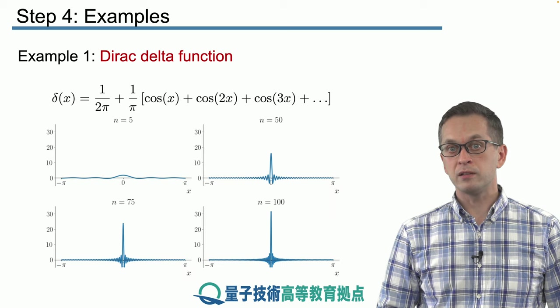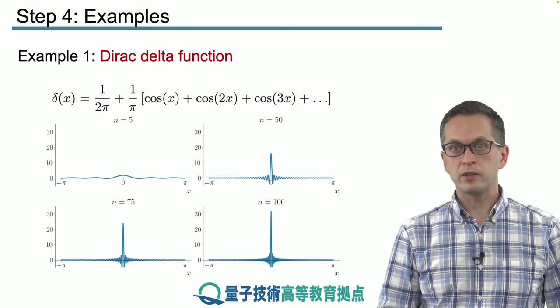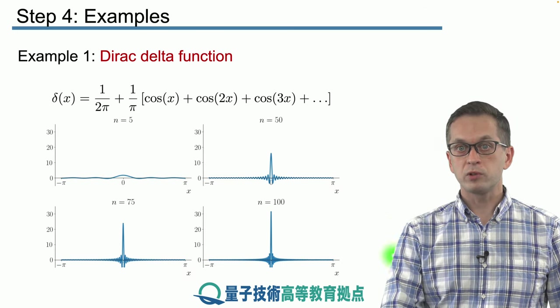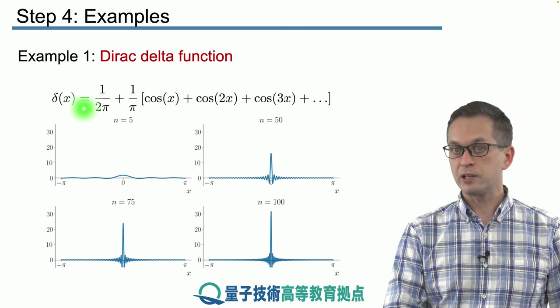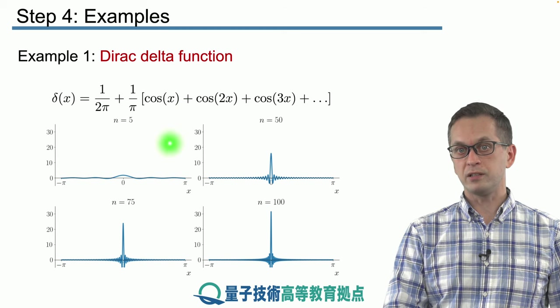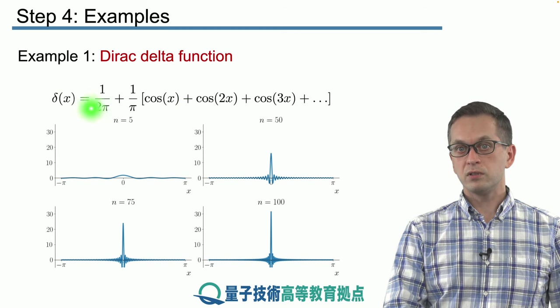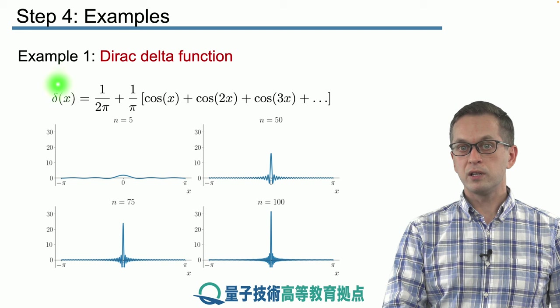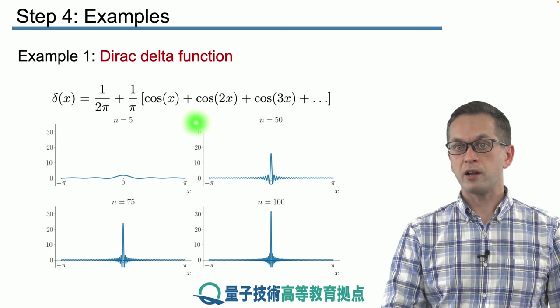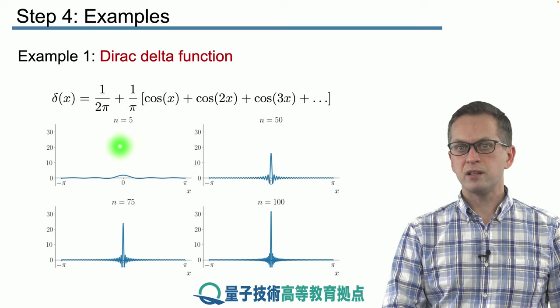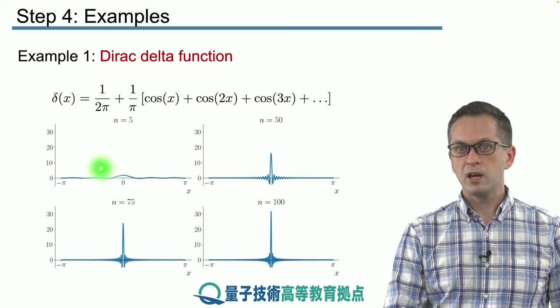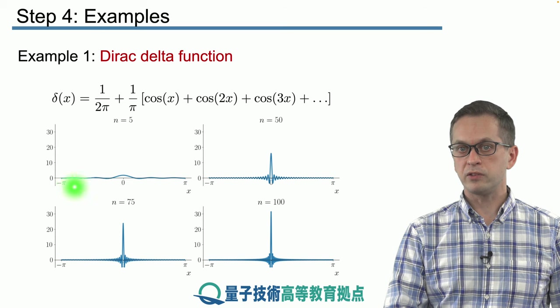So this concludes our first example. Now let's look at a different example. Also, we want to see how quickly the Dirac delta function actually converges. How quickly the Fourier series converges to the Dirac delta function. So we are plotting this Fourier series right here for higher and higher values of n. So you can see that even if we take n equals 5 terms, it doesn't look anything like the Dirac delta function.